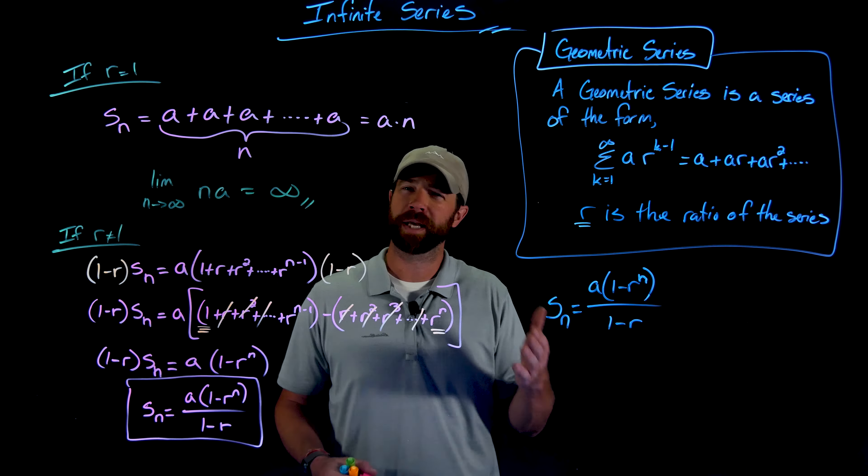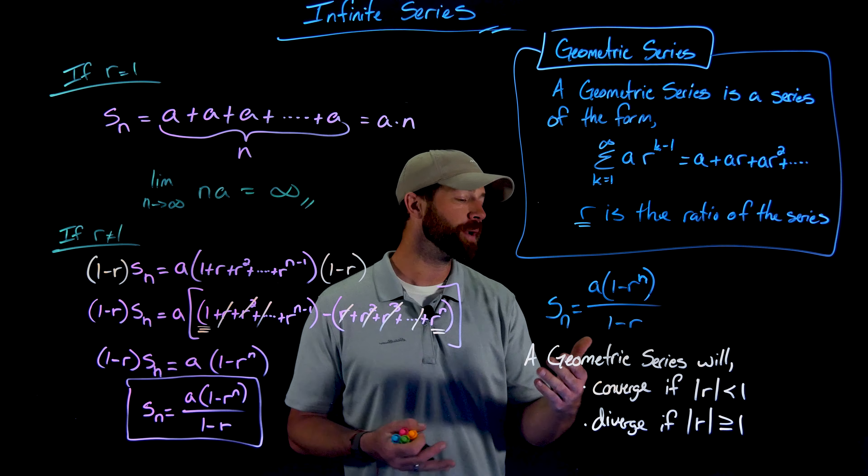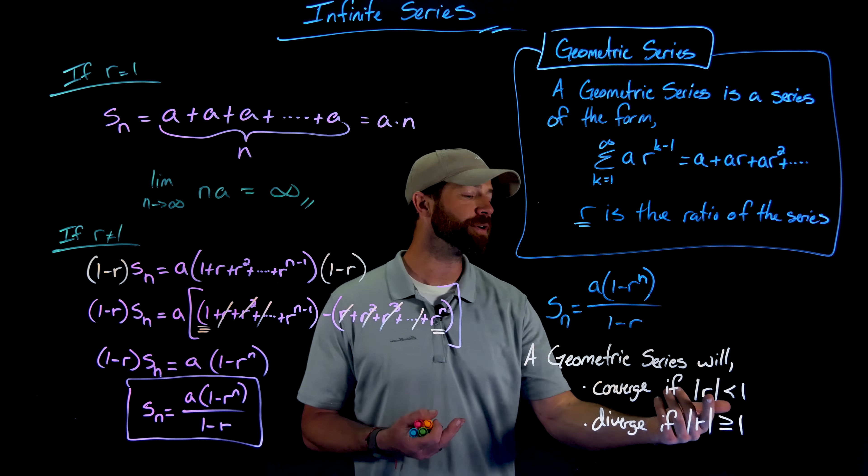So a geometric series will converge if the absolute value of r is less than 1, and it will diverge if the absolute value of r is greater than or equal to 1. Since we have this generalized nth partial sum formula, if we have an r value with absolute value less than 1, we not only know it converges — we can evaluate what it converges to using this formula.